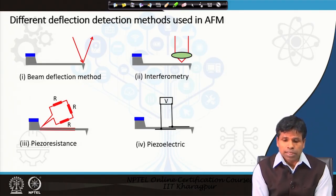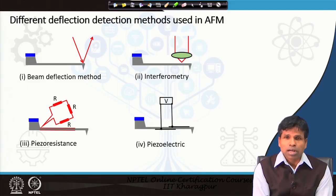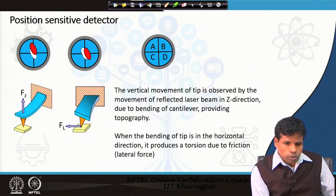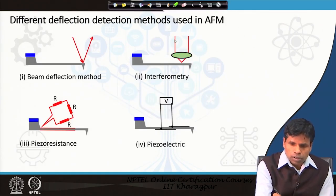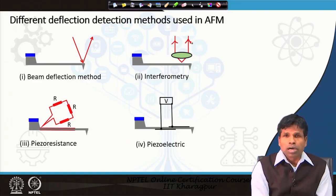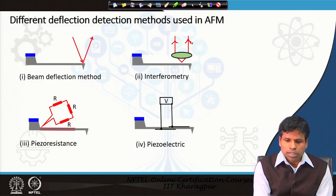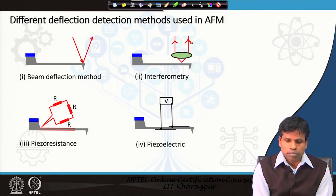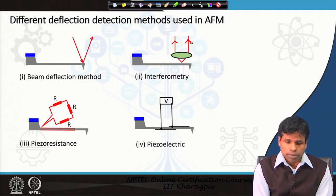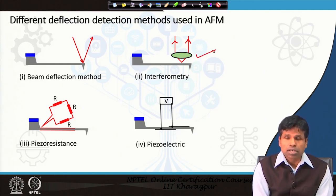We also have interferometry. In interferometry, the backside of the cantilever acts as a light source. The reflected light is split into two parts, which pass through two different path lengths, and then they are recombined to produce an interference pattern. From the interference pattern, we can know the difference in path length and thus determine the displacement or position of the cantilever. It is a very high-sensitivity detection process, but the instrumentation is a little complicated and therefore not very commonly used in AFM.